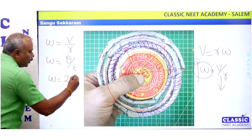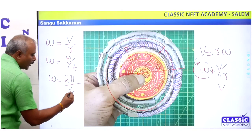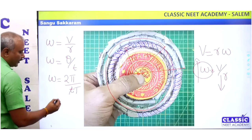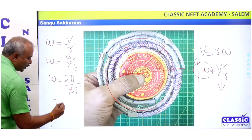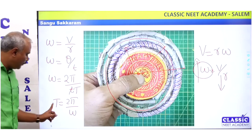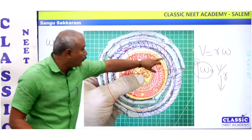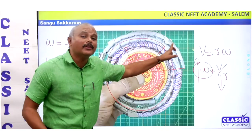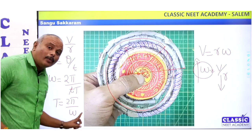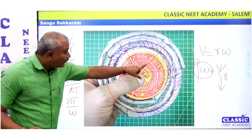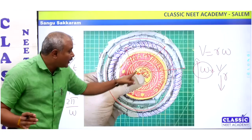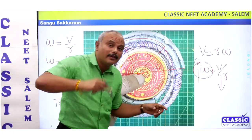Omega equal to 2 pi by T, where capital T is the time period. Time period equal to 2 pi by omega. Time period changes when time period is reached once, which is a time period. Time period changes when omega changes. Even if the radius is less, the time period changes.